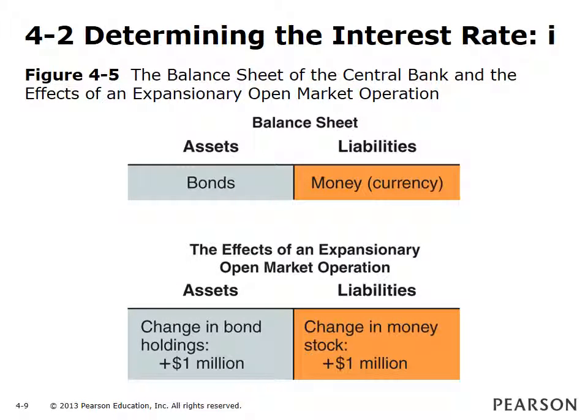Figure 4.5 shows the conduct of monetary policy using open market operations. Central banks change money supply by buying and selling bonds for money in the open market for bonds. To expand money supply, the Fed buys bonds and pays for them by issuing money. This increases currency in circulation and hence money supply. Both the bank's assets and liabilities increase by the same amount.